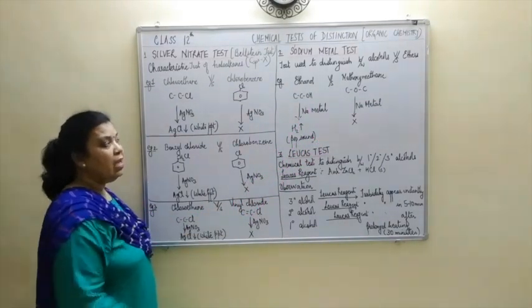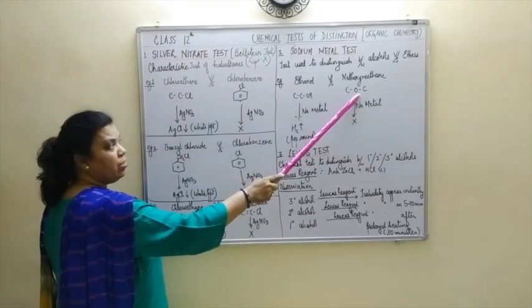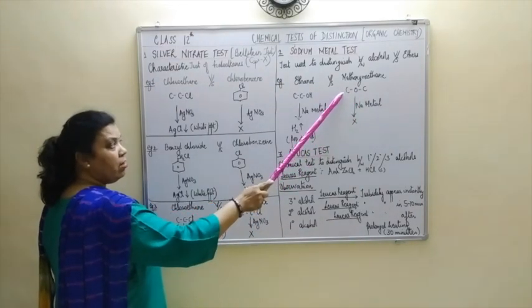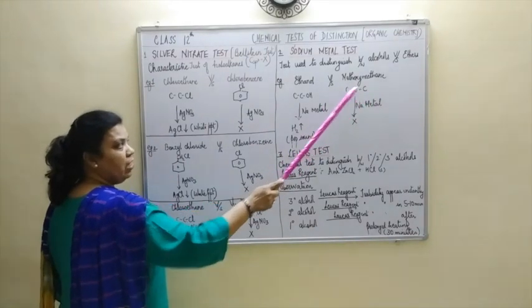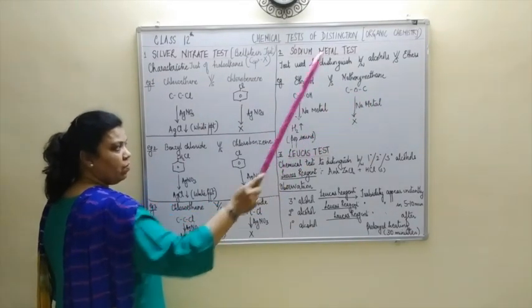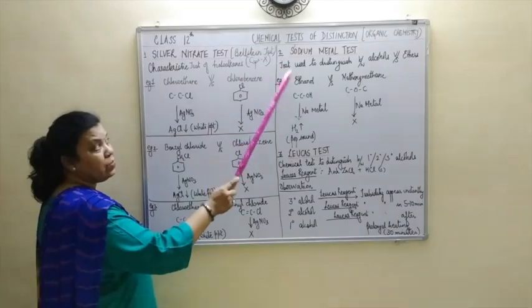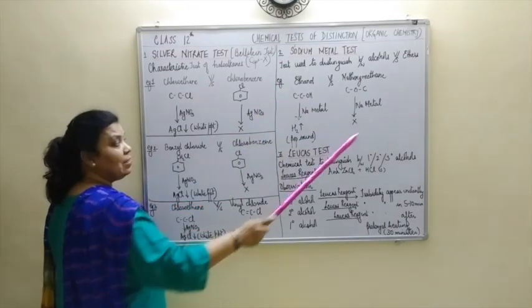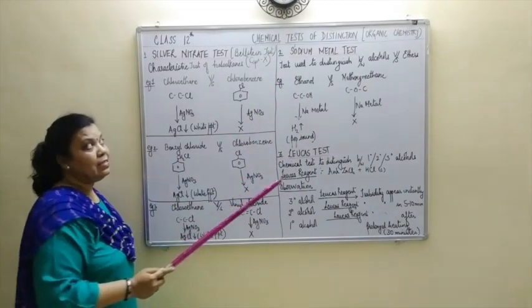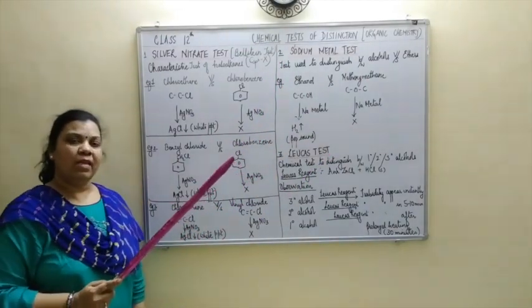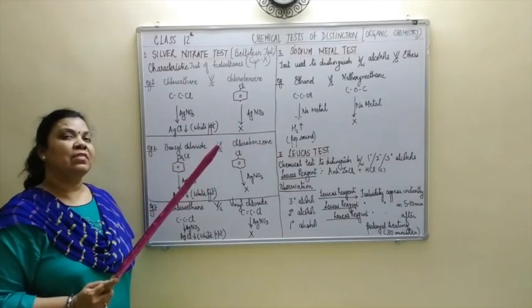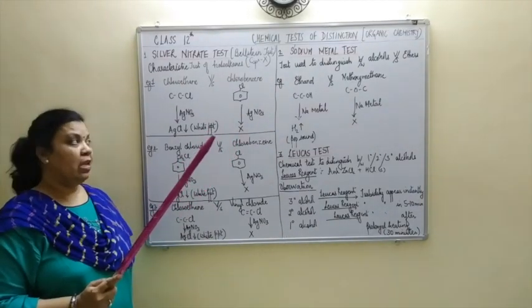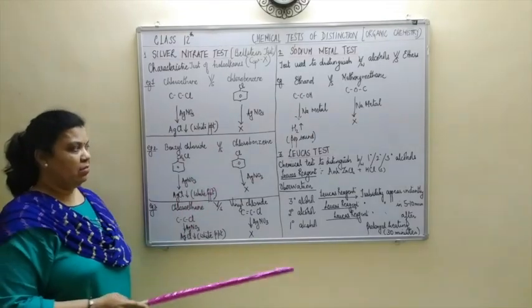The reason alcohols give the sodium metal test is that the OH group contains the active or acidic hydrogen. Therefore hydrogen gas is evolved, and when you bring a burning splinter to the mouth of the test tube it burns with a pop sound. Ethers do not have a free active hydrogen attached to oxygen — rather it is bonded to carbon atoms on either side of the oxygen. Remember, the sodium metal test is used to distinguish between alcohols versus ethers.